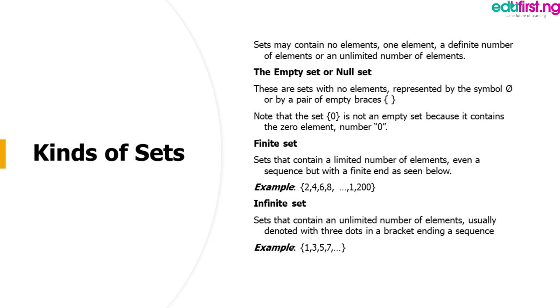Infinite sets. Sets that contain an unlimited number of elements, usually denoted with three dots in a bracket ending a sequence. For example, we have 1, 3, 5, 7, dot dot dot with no other number ending this set. Such is said to be infinite.